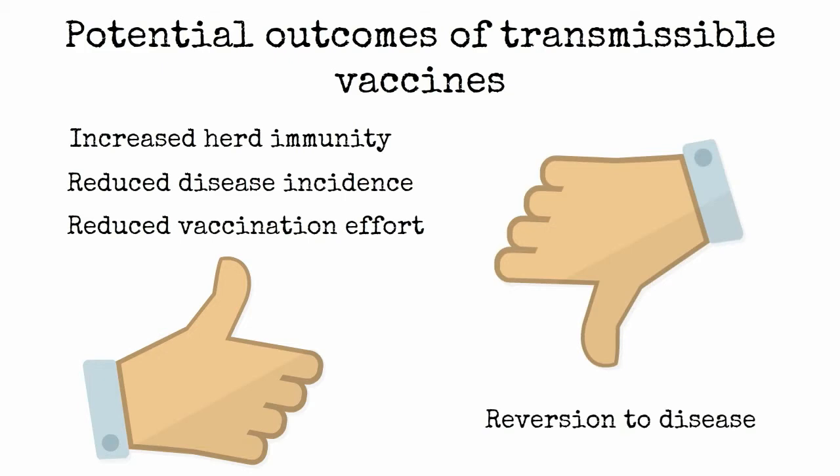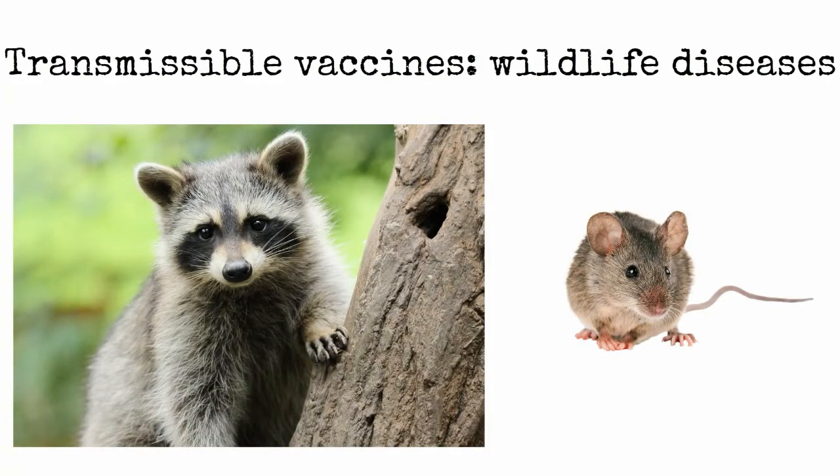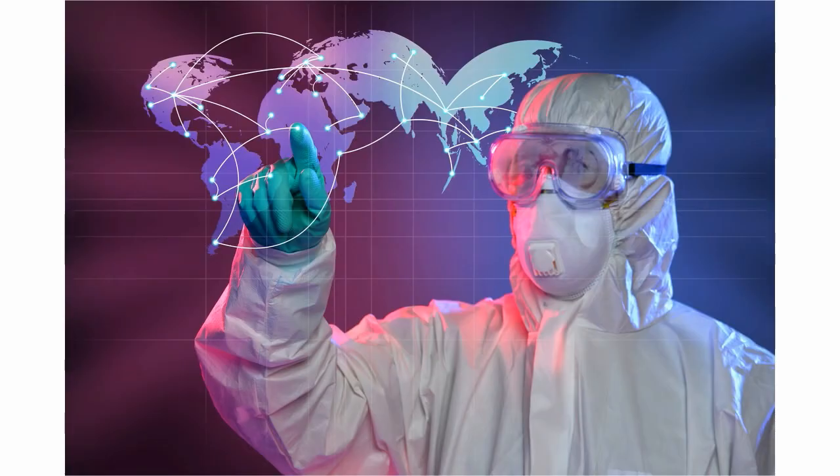Transmissible vaccines could aid the fight against infectious disease in wildlife populations, and use in humans may be warranted for populations that are hard to reach, or for epidemics that are uncontrollable by direct vaccination.